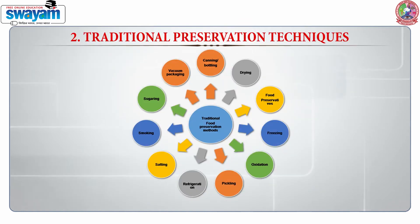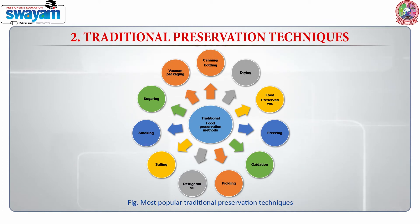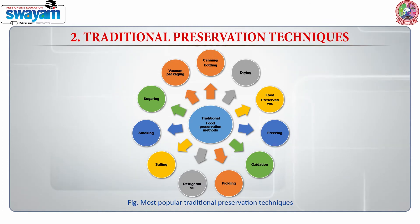The most conventional techniques for preserving food that were in practice historically and are still used today include certain traditional methods such as drying, freezing, and fermenting of food. These methods remain in practice due to their popularity and cost efficiency in food preservation, despite a few shortcomings.